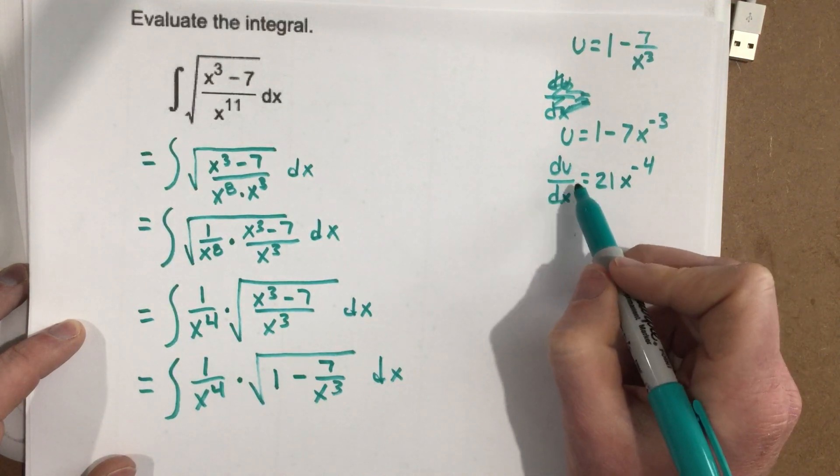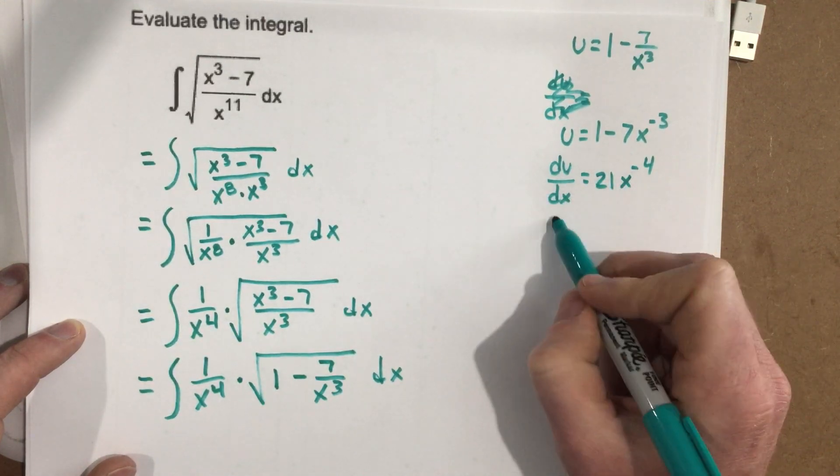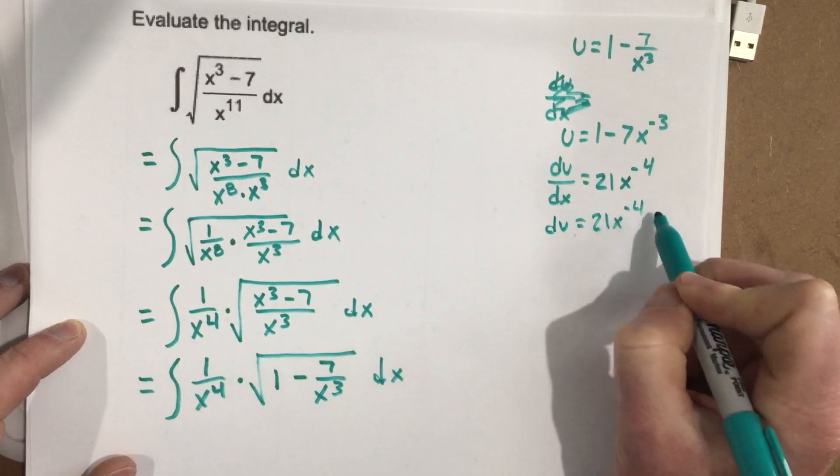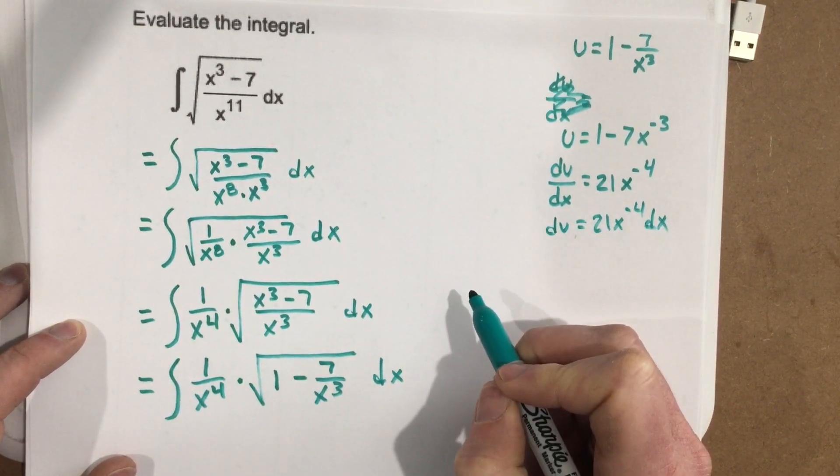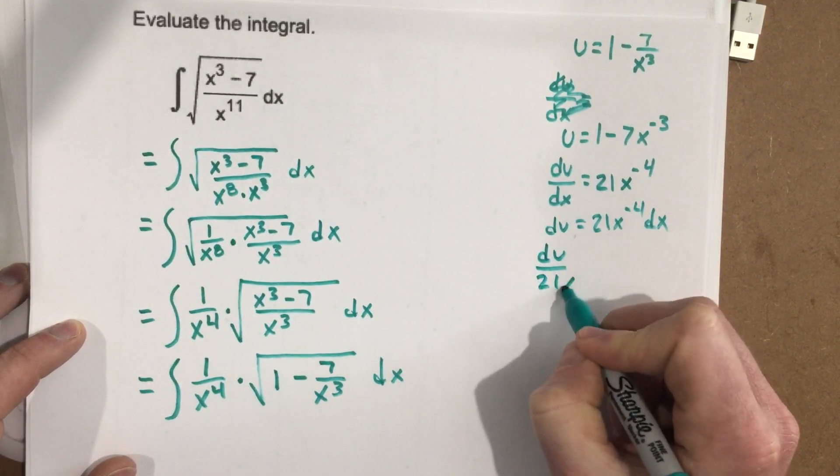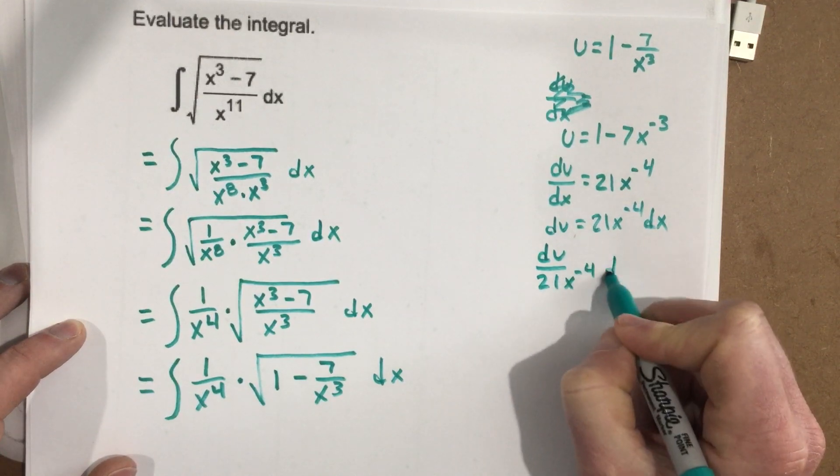So now I've got to solve for dx. So I multiply the dx over, that's du equals 21x to the negative 4 dx. I divide this over, so that's du over 21x to the negative 4 equals dx.